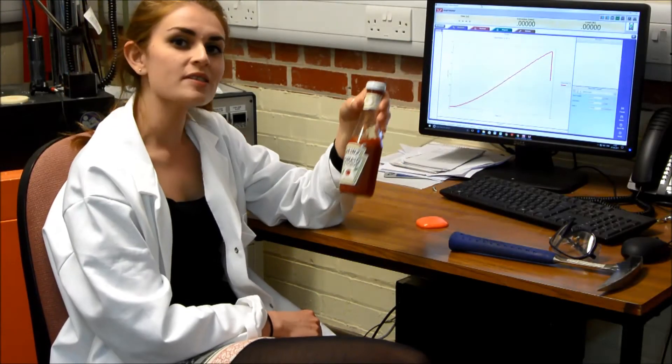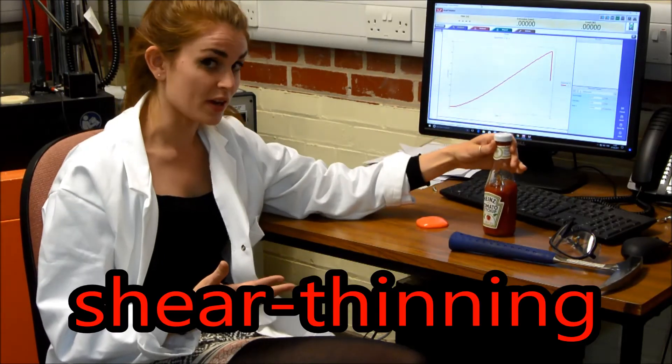So as we've just seen with our ketchup, our viscosity decreased as we increased our deformation rate. And that's what we call a shear thinning material.